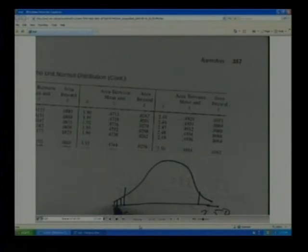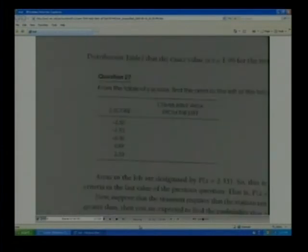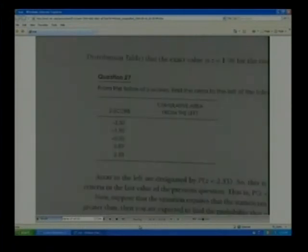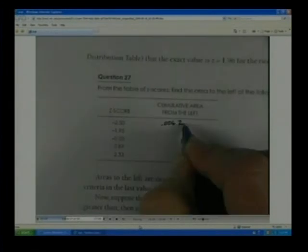It wants a cumulative area from the left. So we see over here that it is 0.0062 that's here, and that area is equal to this same area that's over here. So for this particular one, it would be 0.0062.